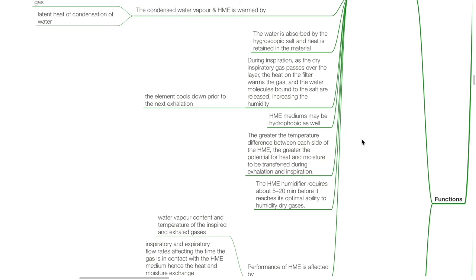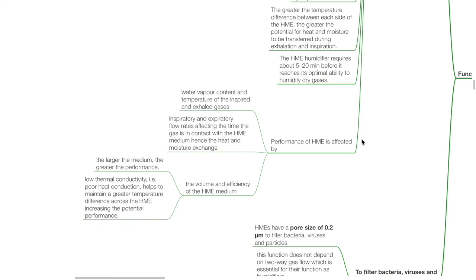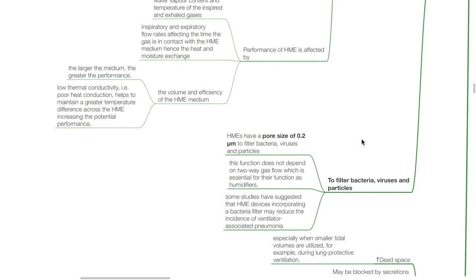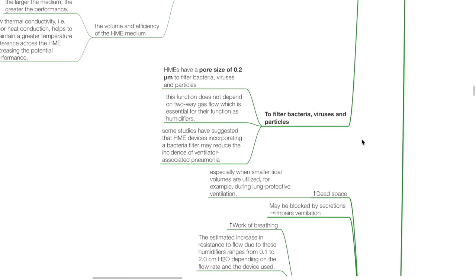The HME humidifier requires about 5 to 20 minutes before it reaches its optimal ability to humidify dry gases. Its performance is affected by the water vapor content and temperature of inspired and exhaled gases; inspiratory and expiratory flow rates affecting the time the gas is in contact with the HME medium; and the volume and efficiency of the HME medium — the larger the medium, the greater the performance. Low thermal conductivity helps maintain a greater temperature difference across the HME, increasing potential performance. Some studies have suggested that HME devices incorporating a bacterial filter may help reduce the incidence of ventilator-associated pneumonia.